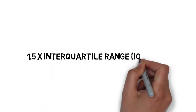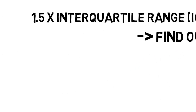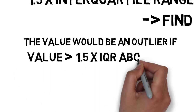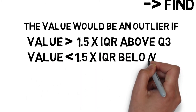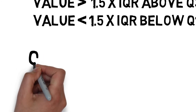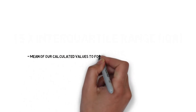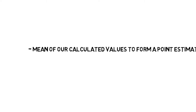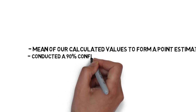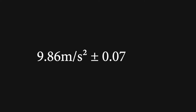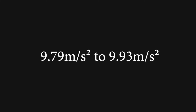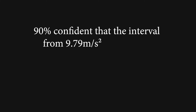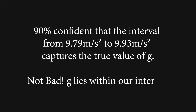Using the 1.5 times IQR rule, we did not find any outliers. We used the mean to form a point estimate and conducted a 90% confidence t-interval for means using Google Sheets' CONFIDENCE.T function. Our final estimate for g is 9.86 meters per second squared plus or minus 0.071 meters per second squared, resulting in an interval of 9.79 to 9.93 meters per second squared. We are 90% confident this interval captures the true value of g.